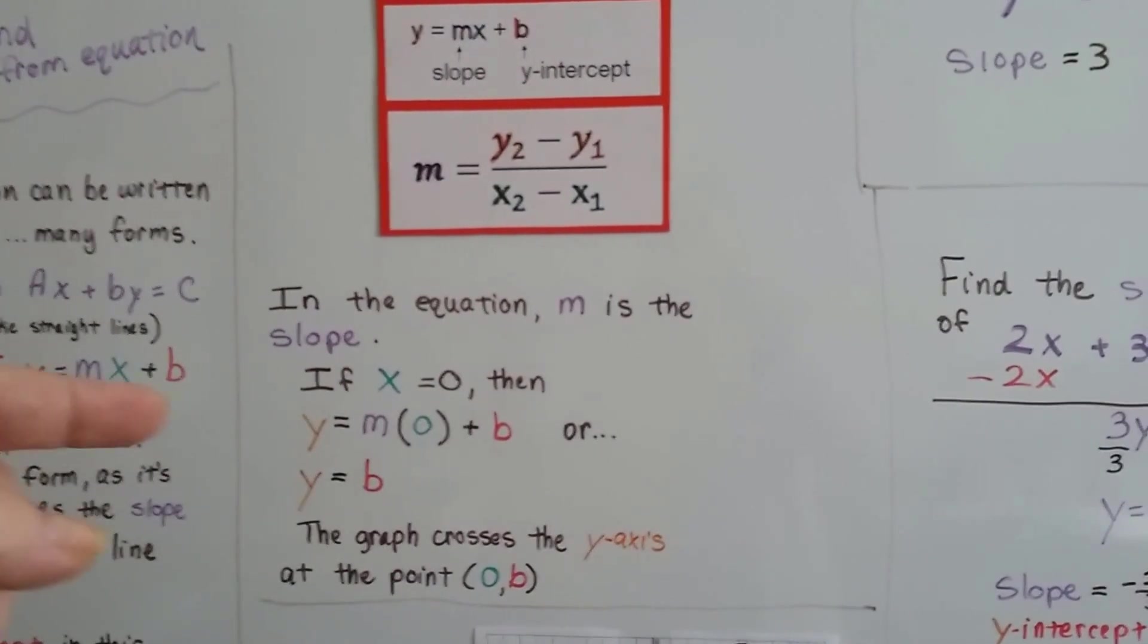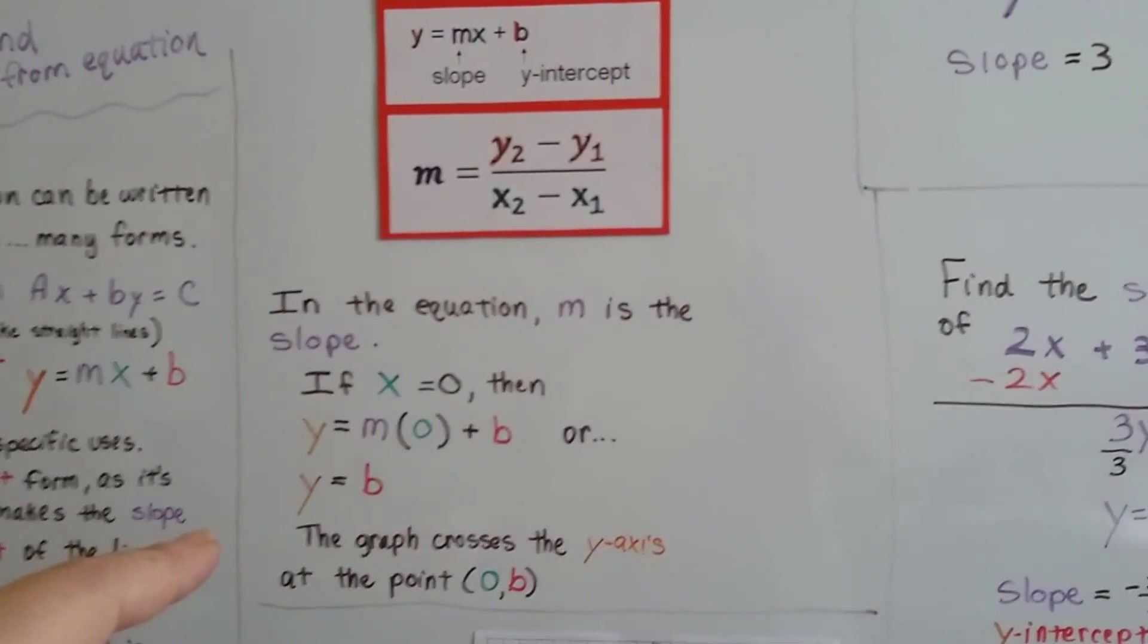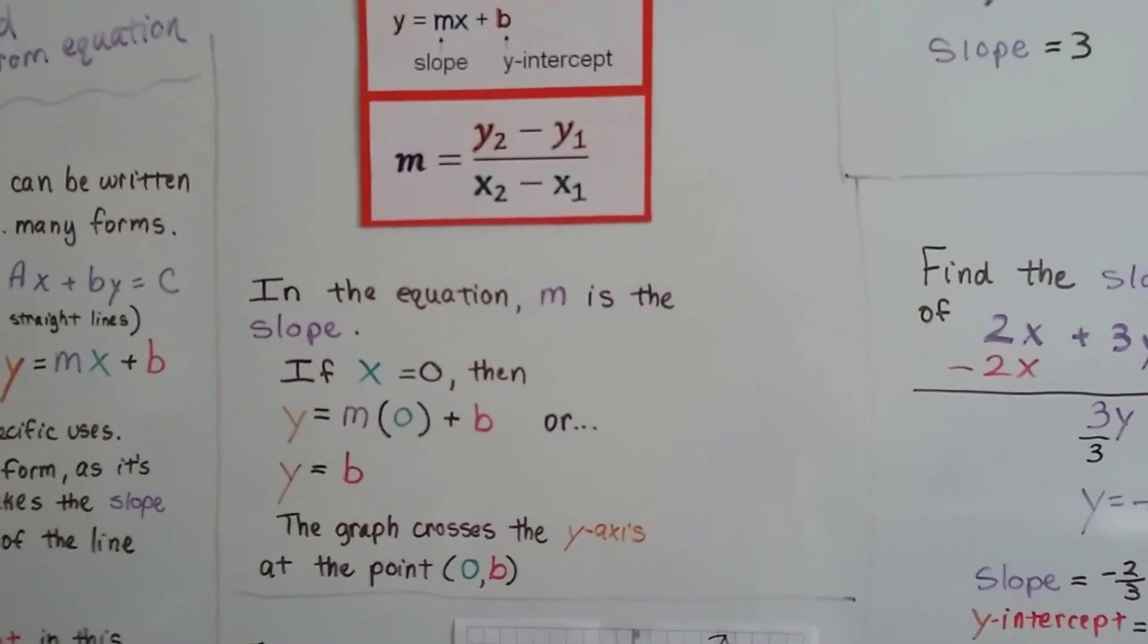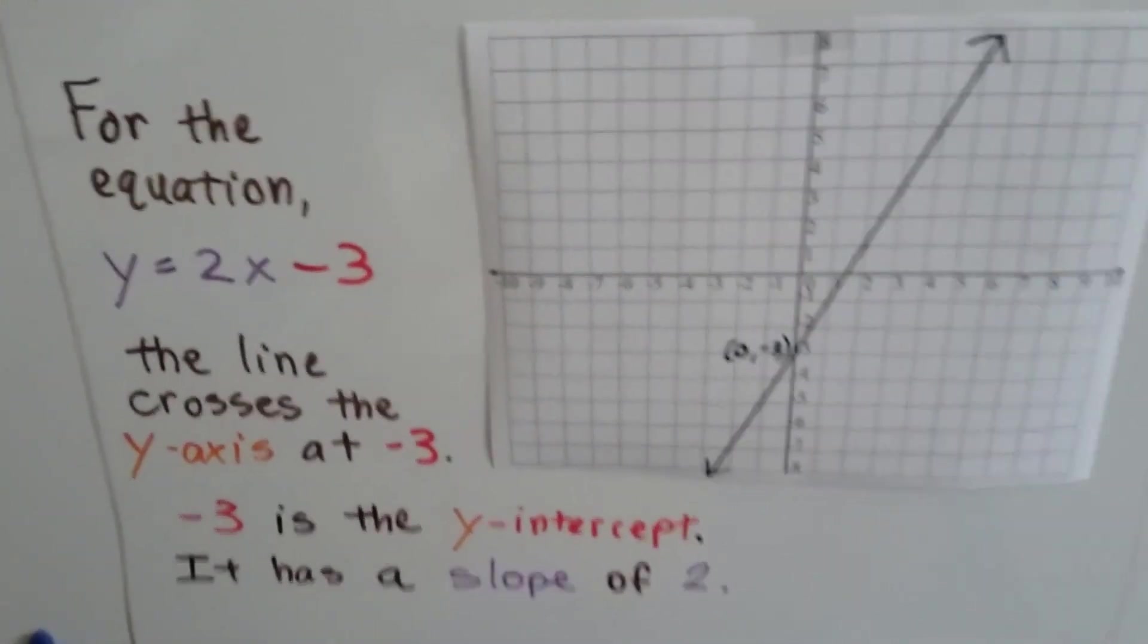Principle of 0. Anything times 0 is 0. So really we're saying y is equal to b. And the graph crosses the y-axis at the point 0b. 0 for x and b for y.